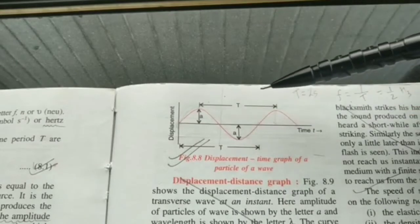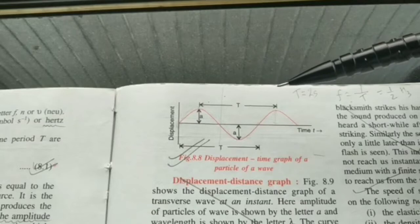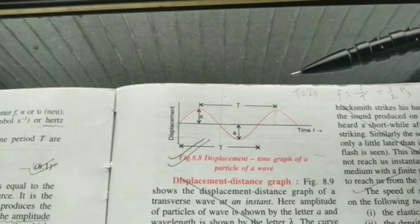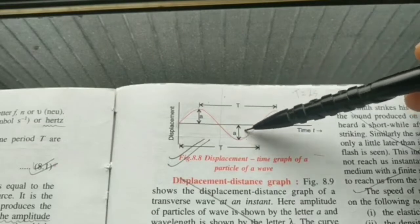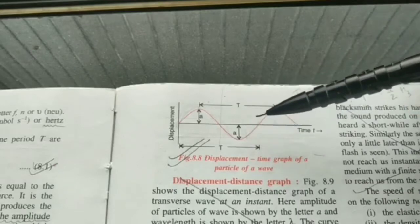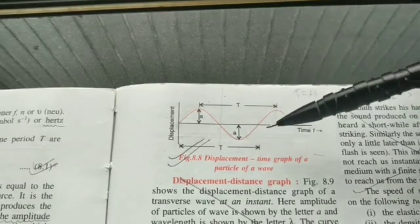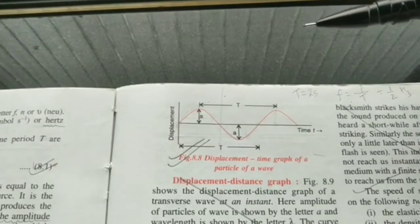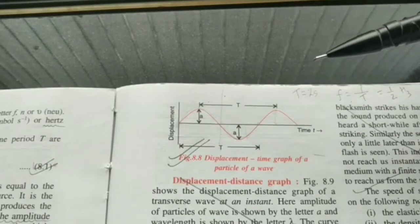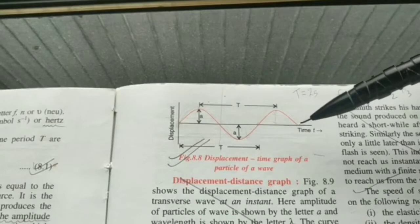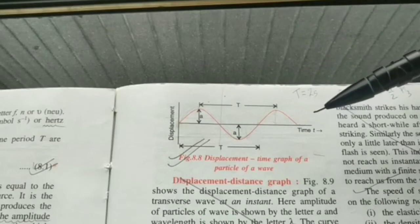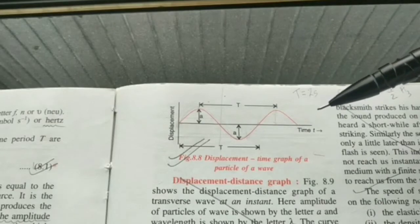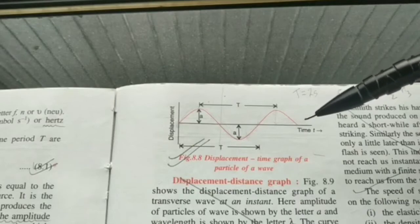If I were to hit that metal strip very hard, the frequency would not change — only the amplitude would change, making the sound louder. The loudness of sound depends on amplitude, not on frequency. Also, if the medium were changed from air to water, the frequency of sound remains the same. The speed may change and the loudness may change, but not the frequency. Even the wavelength can change.